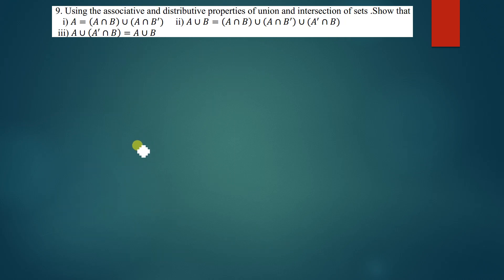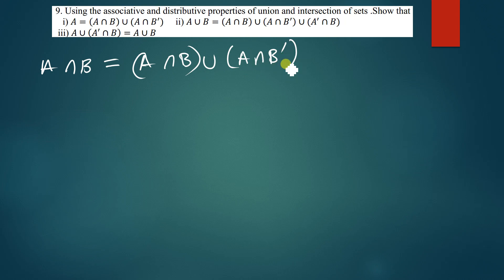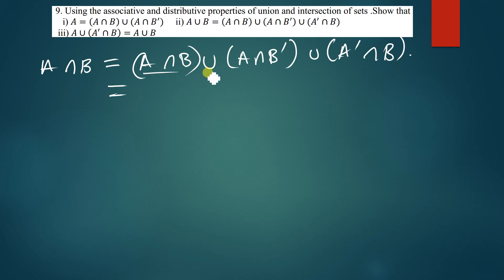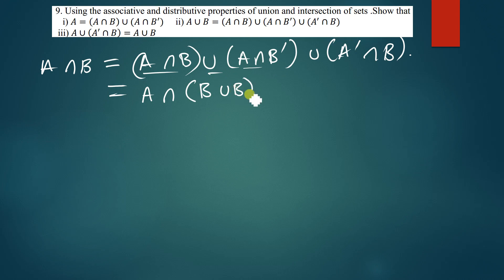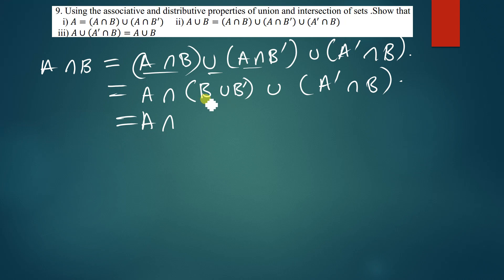The next question asks us to prove that A union B is equal to (A∩B) ∪ (A∩B') ∪ (A'∩B). I'll look at the common parts on the right-hand side: I have A intersection in two terms, so I write A intersection outside and open brackets, leaving B union B complement inside the brackets. There's still another set: A complement intersection B.